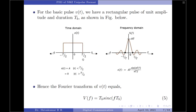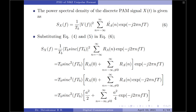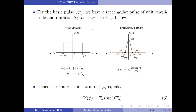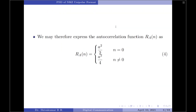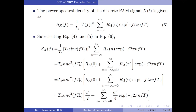Now substituting V(f) and Ra(n) back into the PSD equation: Sx(f) = (1/Tb) · |Tb · sinc(f·Tb)|² · summation of Ra(n) · exp(−j2πnfTb). Simplifying, one Tb in the denominator cancels with one from the numerator, yielding Tb · sinc²(f·Tb), multiplied by the summation.